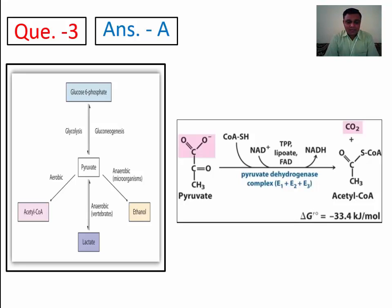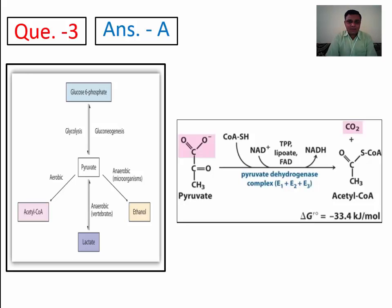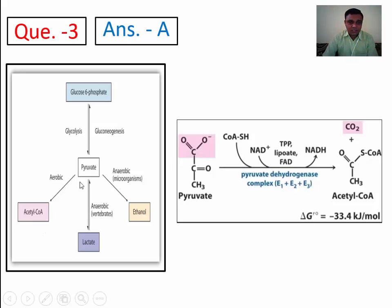Increased pyruvate and lactate are found in deficiency states. After glycolysis, pyruvate is synthesized and may be converted into acetyl-CoA by aerobic glycolysis, or into lactate in anaerobic glycolysis. In vertebrates under aerobic conditions, pyruvate is converted to acetyl-CoA. The enzyme required for this conversion is the pyruvate dehydrogenase complex, which is composed of three enzymes and their coenzymes.